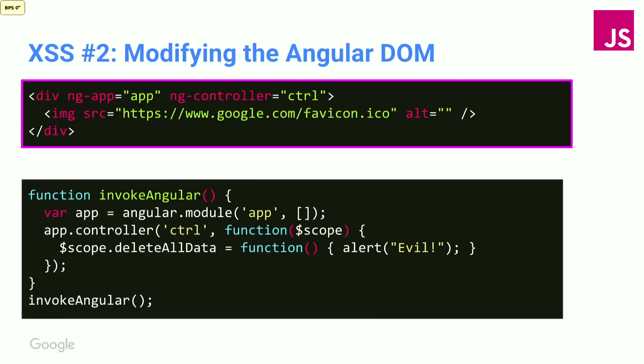Let's say we know about this and we create our Angular part of the page statically — no server-side template generation. We have a very simple application with just one image tag displaying the favicon. We have a controller with a dangerous function, but we're not executing it, so everything is fine. Nothing to worry about here.